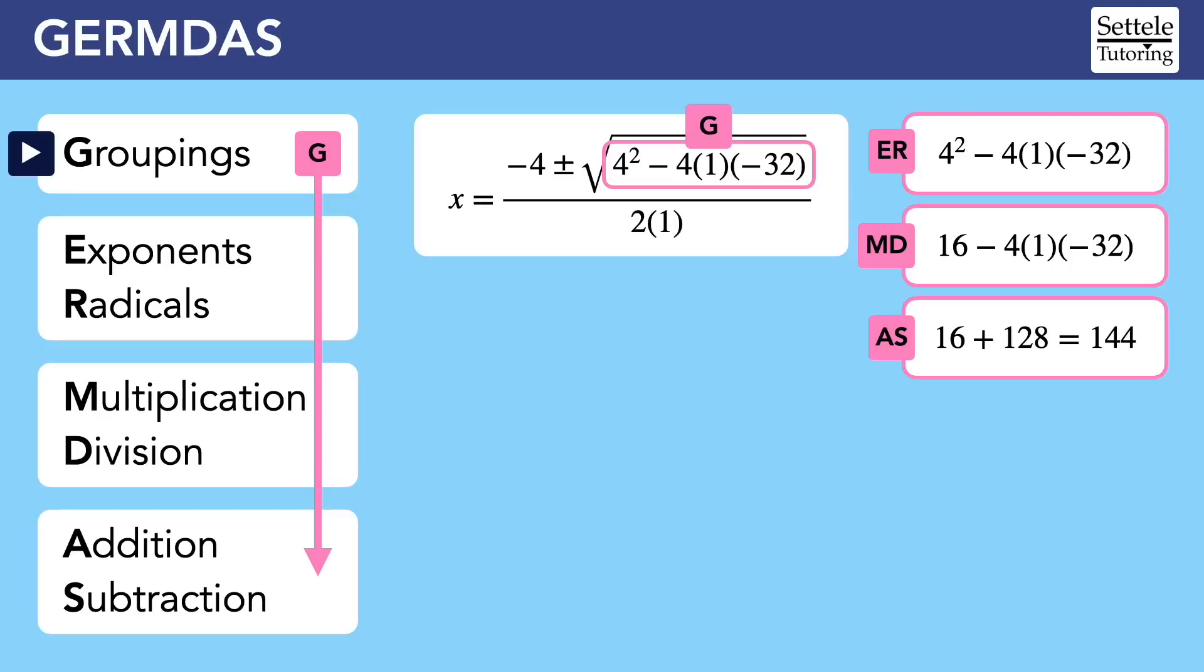Now we're just left with addition and subtraction, and 16 plus 128 is 144. Now that we've completely simplified this grouping, we can put it back into the main equation. Notice that I also simplified another grouping on the bottom of the fraction, but that one was easy because 2 times 1 is 2.